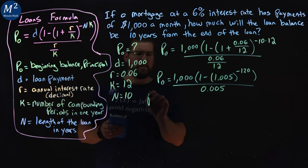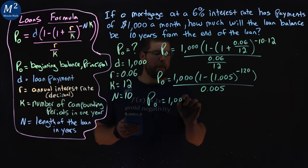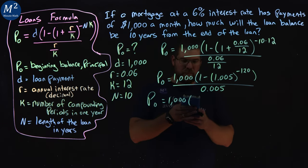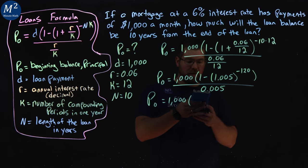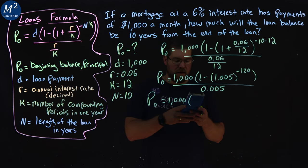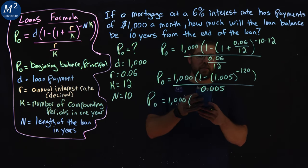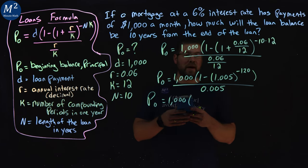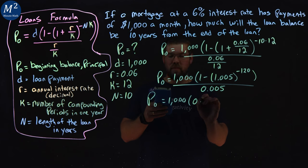So now let's keep simplifying. P sub 0 is 1,000. Now 1.005 to the power of negative 120, and then 1 minus, that's a 0.5496.